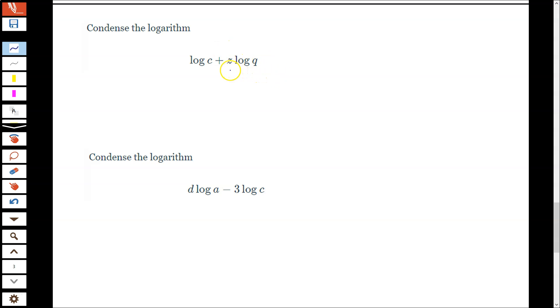We're going to work on each logarithm individually before we combine them. Okay, so what we don't want to do is do C Q first without dealing with the Z. So I'm going to worry about this guy. So this guy becomes log Q to the Z power, and then log C is just hanging out.